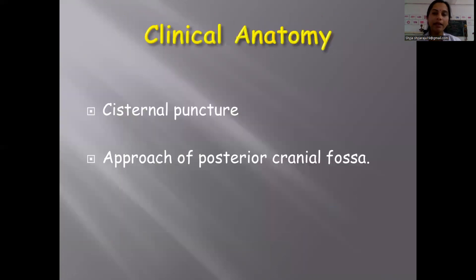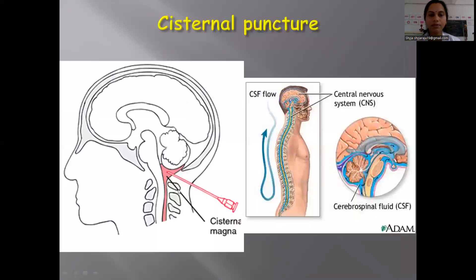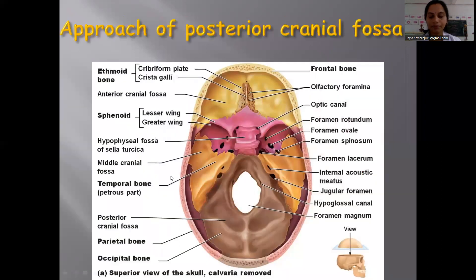Regarding the clinical anatomy: cisternal puncture and the approach to the posterior cranial fossa are relevant here. Cisternal puncture involves introducing a catheter to withdraw the CSF. You can approach the posterior cranial fossa through this triangle — by the floor of the triangle you can reach the posterior cranial fossa.